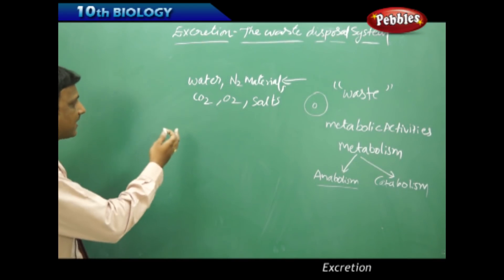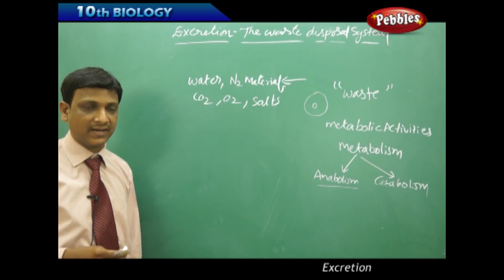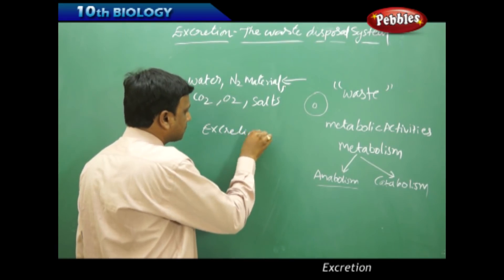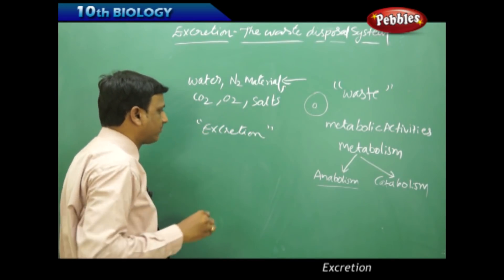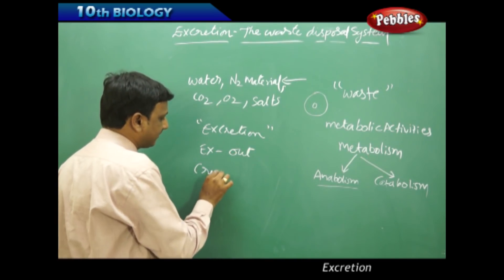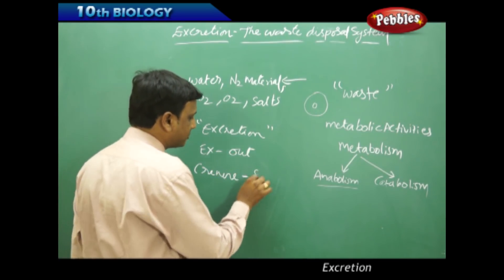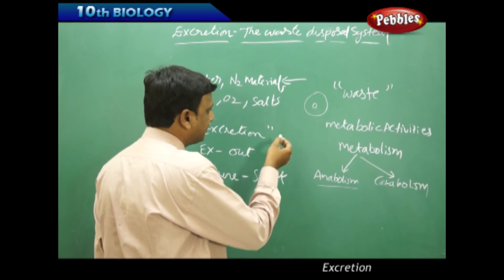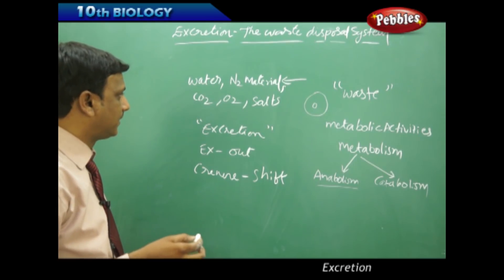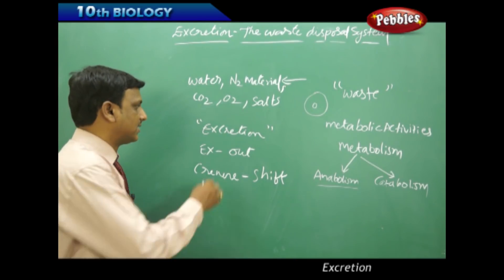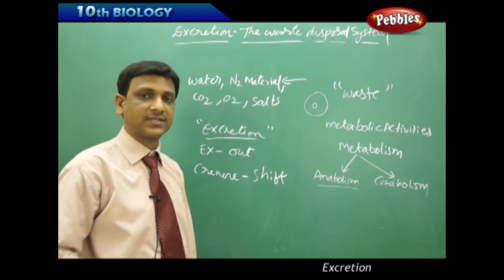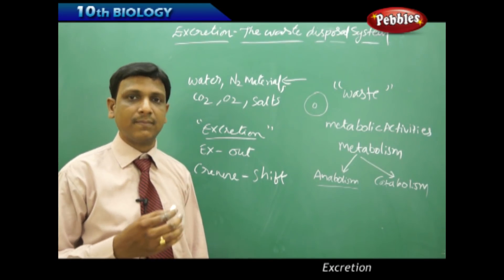So in such way they excrete the oxygen. We excrete carbon dioxide. These kinds of waste materials are to be sent out of the body and this process is called as excretion. The word excretion is coined from a Latin word which means 'ex' means out and 'crinare' means shift. So shift of these waste materials like nitrogen waste, excess water or carbon dioxide and other salts out of the body is called as excretion. In this topic we're going to discuss about the process of excretion, how it takes place in plants and animals.